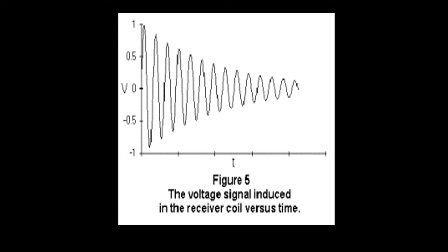This is a figure of the voltage signal induced in the receiver coil versus time. The free induction decay voltage is strongest when you first start listening for it — very strong initially — and then as transverse magnetization is lost, it becomes smaller and smaller and eventually goes away.